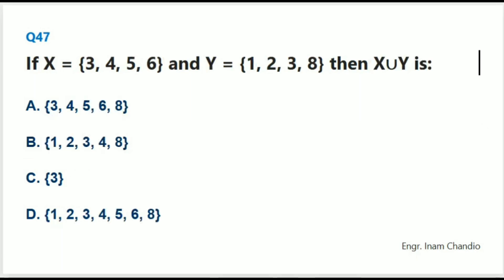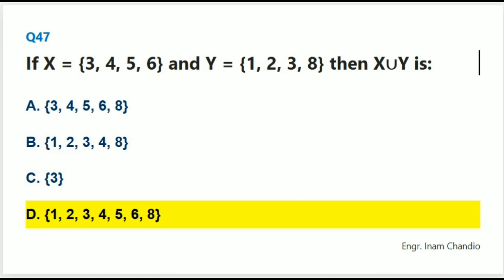If X = {3, 4, 5, 6} and Y = {1, 2, 3, 8}, then X ∪ Y is: The correct answer is B.